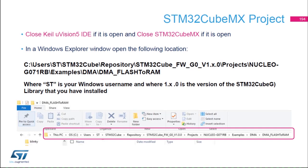First, close Keil MDK and STM32CubeMX if they are open. Then open Windows Explorer and navigate to the following location: your user account, then the STM32Cube directory repository, the G0 library, the version number, then Projects, the Nucleo G071RB board projects, Examples, DMA, and then DMA Flash to RAM. Once you open this, you will find the IOC file and the projects in this location.